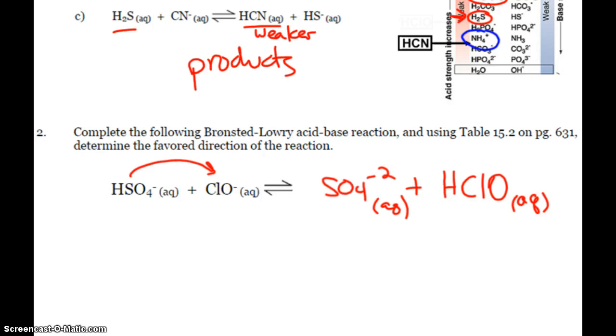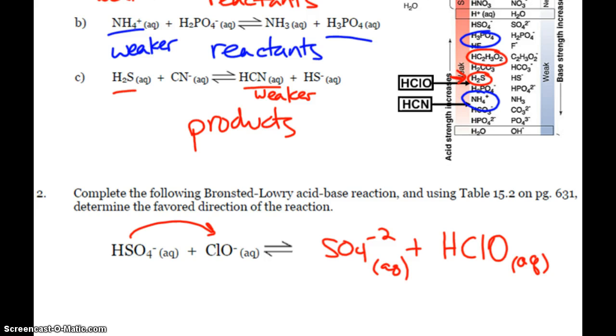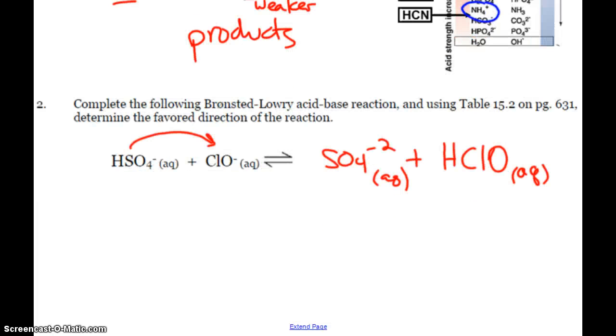And so, determine the favored direction. Alright, so I have to look on my little chart again. HSO4 isn't there. I'm sorry, HClO isn't there. So HClO is there. HSO4 is up here. HClO is weaker. And so, this is going to be going to the products favored there because HClO is weaker than the HSO4.